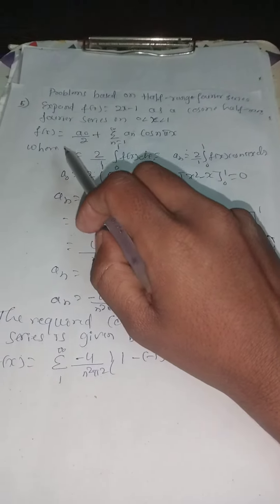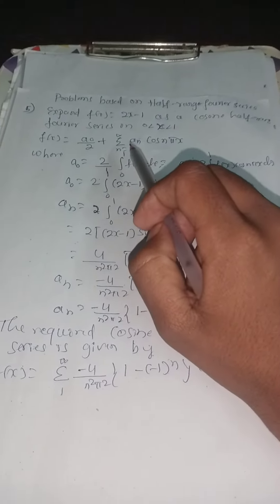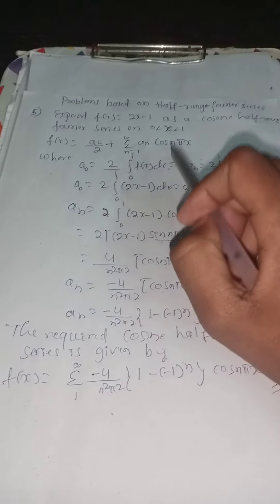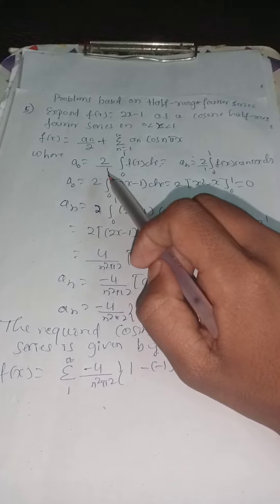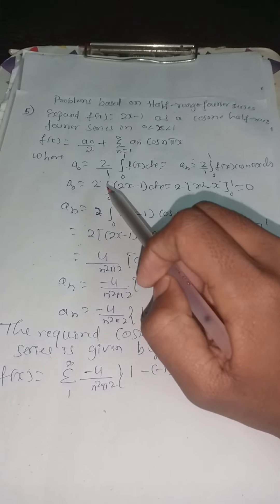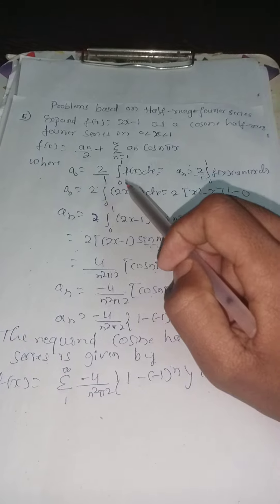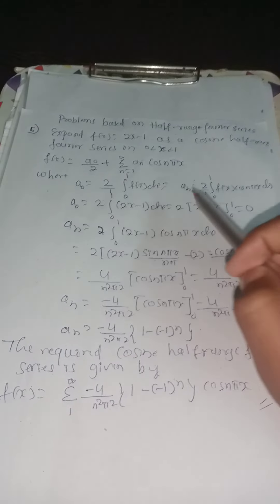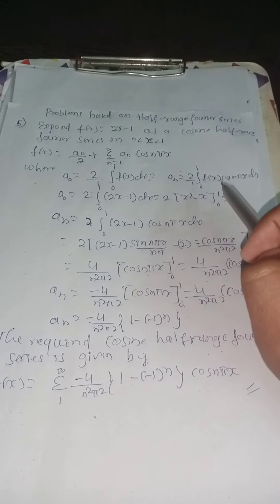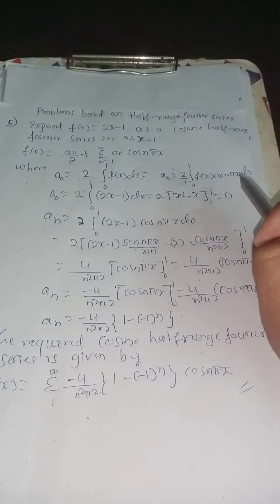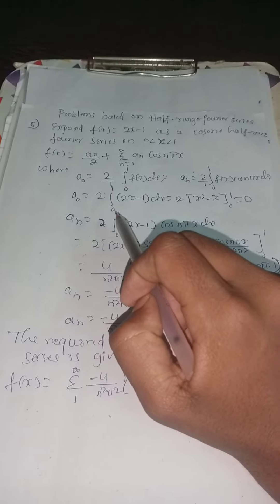The given formula is f(x) equal to a0 divided by 2 plus summation from n equal to 1 to infinity of an cos(nπx). a0 equal to 2 divided by 1 times integration from 0 to 1 of f(x) dx. an equal to 2 divided by 1 times integration from 0 to 1 of f(x) cos(nπx) dx.